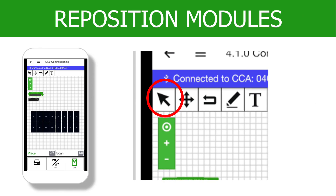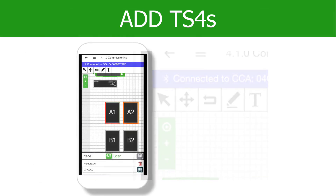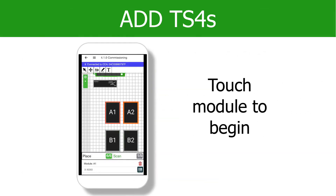Select a pointer on the top toolbar to move modules into their correct positions once they have been placed. Once all modules are placed, it is time to add the Tigo TS4s.